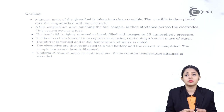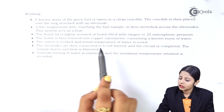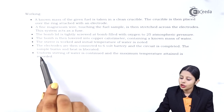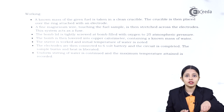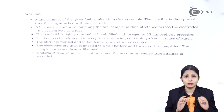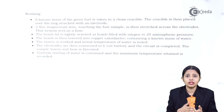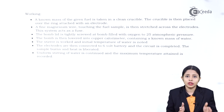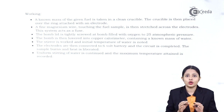The initial temperature is noted by the Beckmann thermometer already inserted inside the bomb calorimeter. The electrodes are then connected to a 6-volt battery and the circuit is completed. The sample burns and heat is liberated. Uniform stirring of the water is continued — because of this electrical stirring, the heat spreads uniformly throughout the calorimeter — and the maximum temperature attained is recorded. Whatever is the highest recorded temperature corresponds to the calorific value for that particular fuel placed inside the bomb calorimeter.